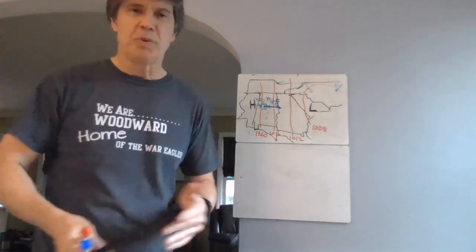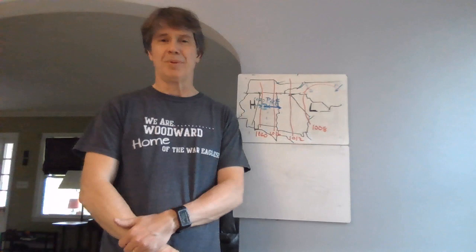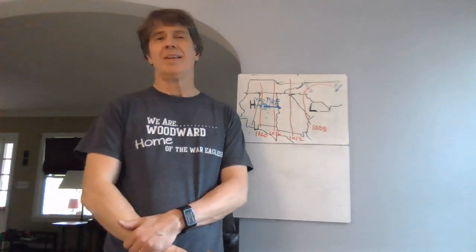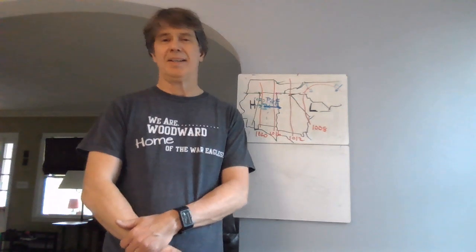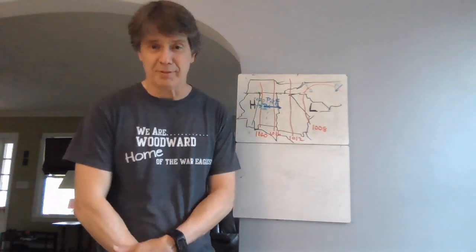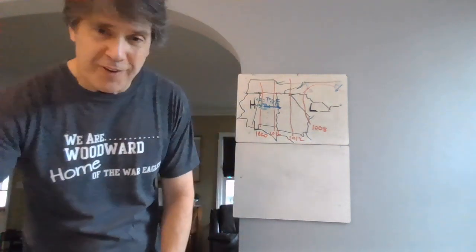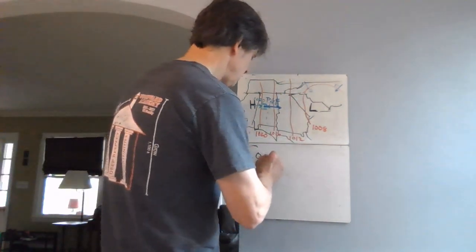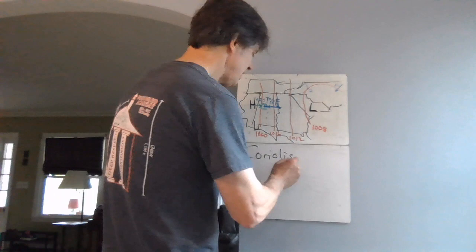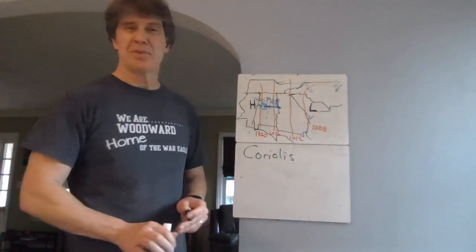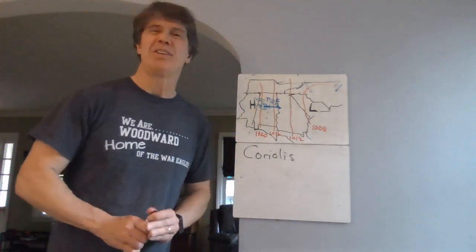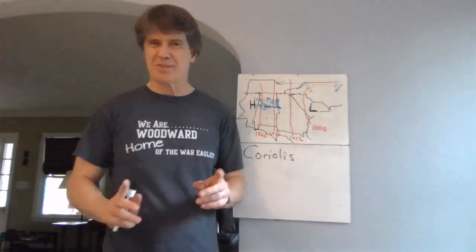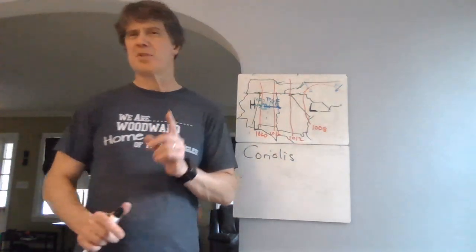The problem is the earth is spinning, and that puts a twist on everything. The twist is called the Coriolis force — or better, the Coriolis effect, because it's not exactly a force. It looks like a force and does things like a force because it's a frame-of-reference issue. It would be better demonstrated with a classroom where I could throw a ball to you, so you'll have to use your imagination.